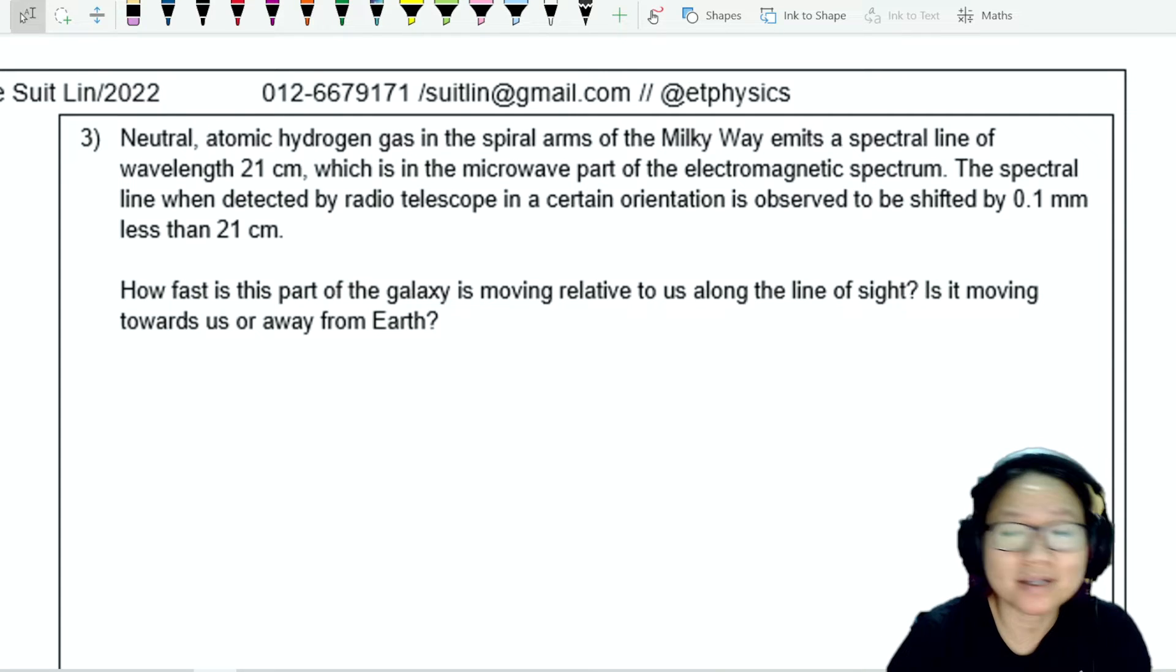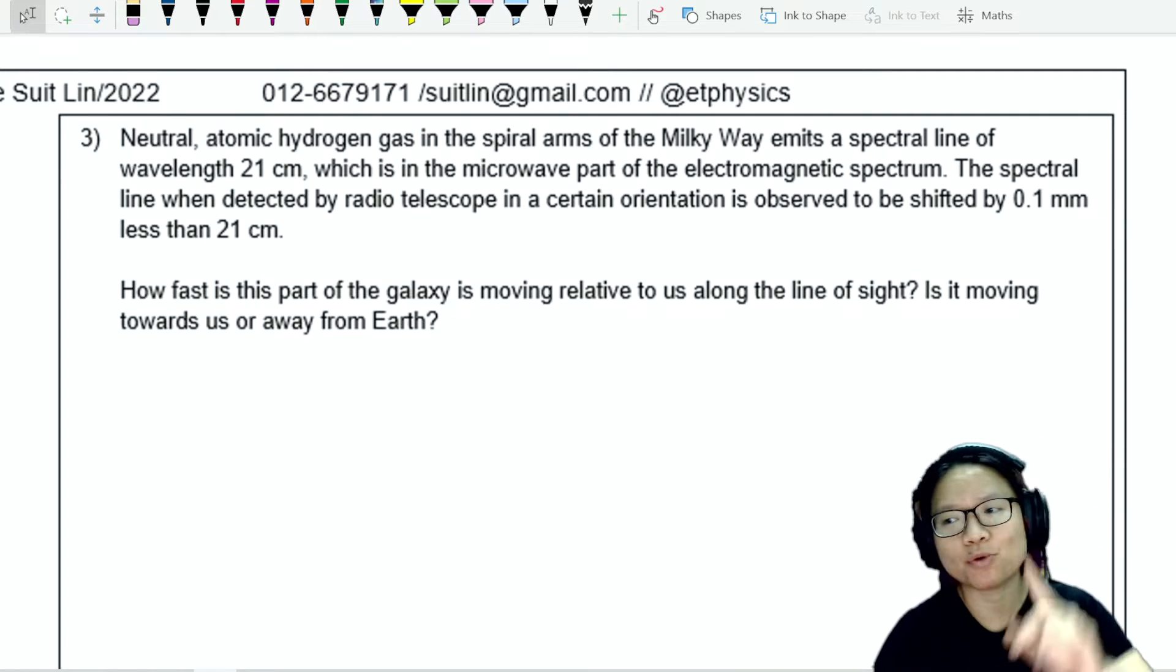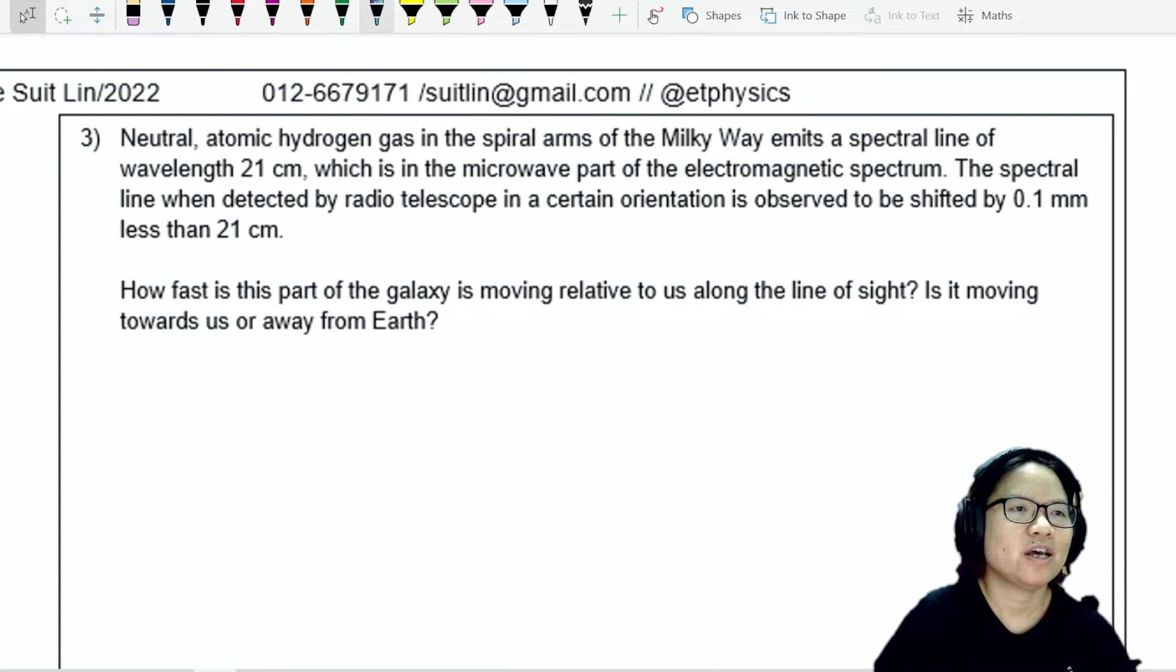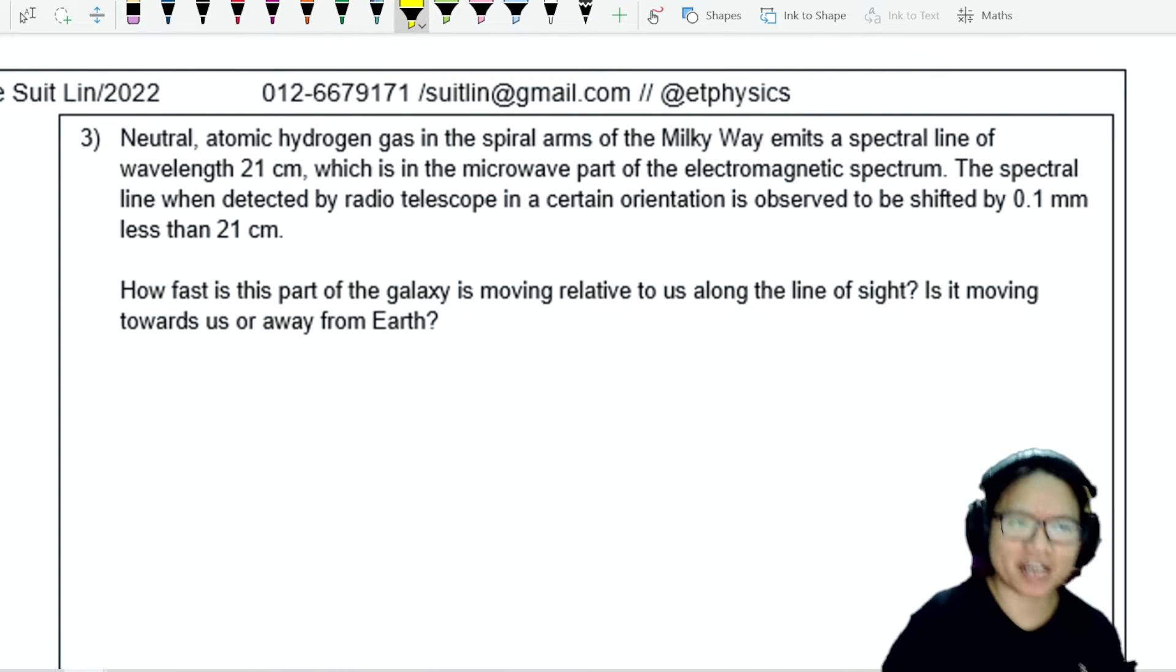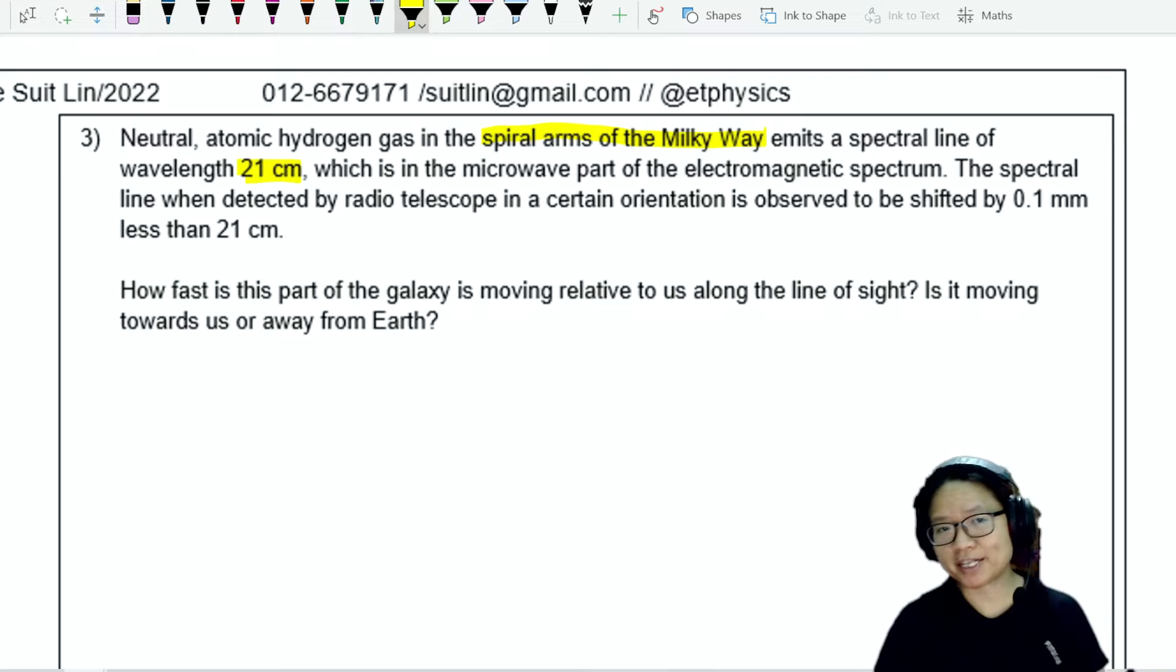Let's check out this example about Doppler shift in our very own Milky Way. Neutral atomic hydrogen gas in the spiral arms of the Milky Way emits a spectral line of wavelength 21 cm, which is in the microwave part of the electromagnetic spectrum.